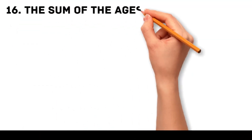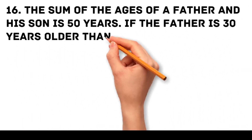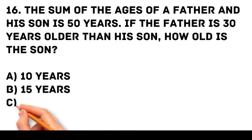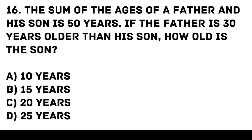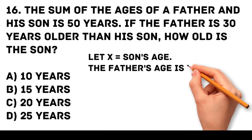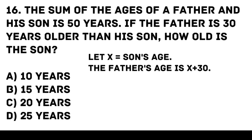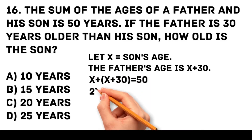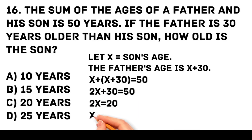Question 16. The sum of the ages of a father and his son is 50 years. If the father is 30 years older than his son, how old is the son? A. 10 years. B. 15 years. C. 20 years. D. 25 years. Answer: A. 10 years. Let x be the son's age. The father's age is x plus 30. x plus (x plus 30) equals 50. 2x plus 30 equals 50. 2x equals 20. Divide by 2. x equals 10.